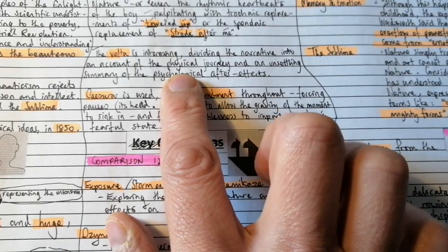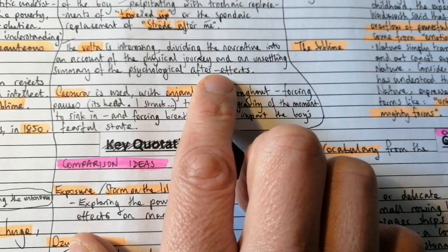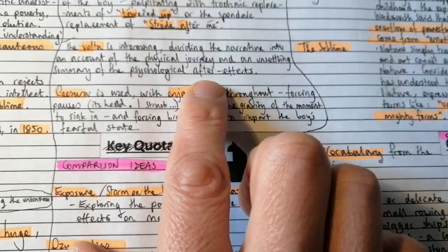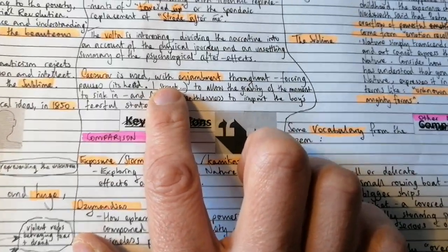The Volta structurally is interesting because it divides a narrative into an account of the physical journey and an unsettling summary of the psychological after effects. Some other structural devices used,